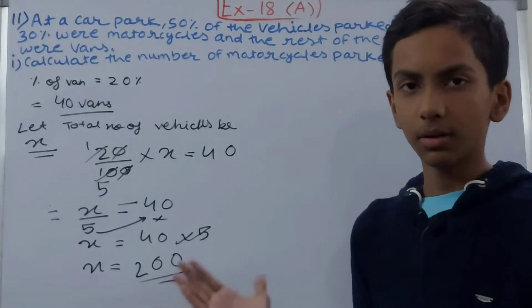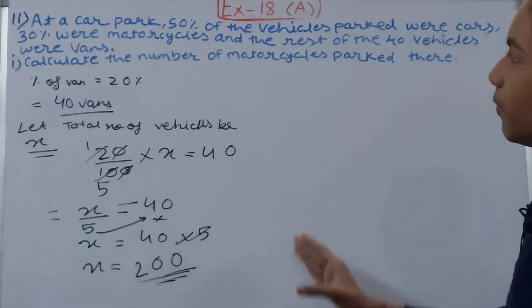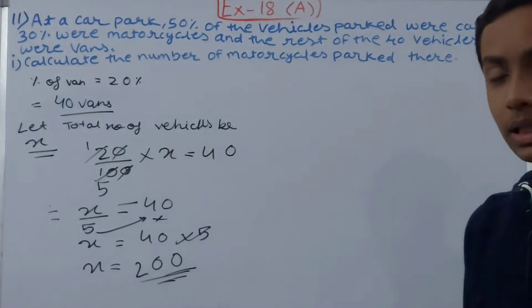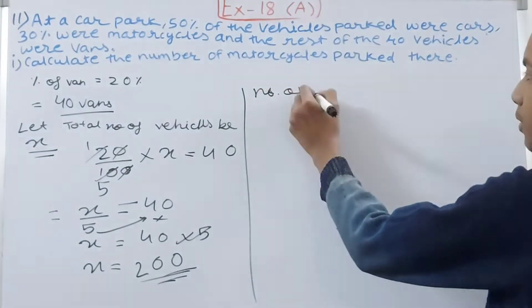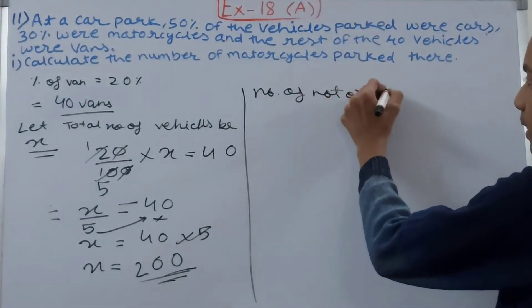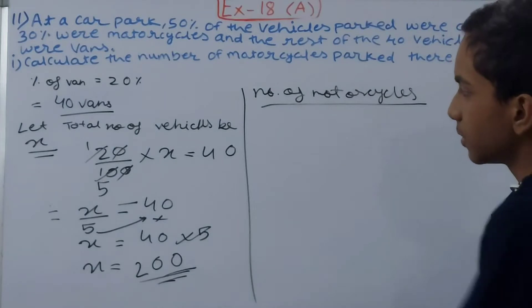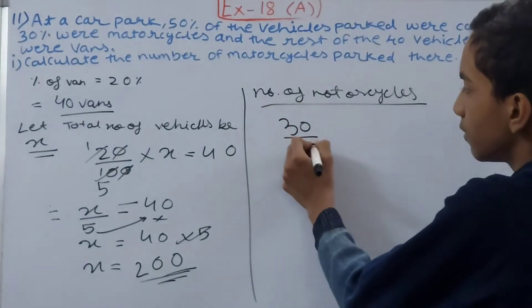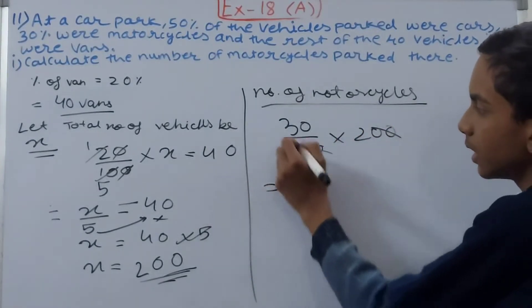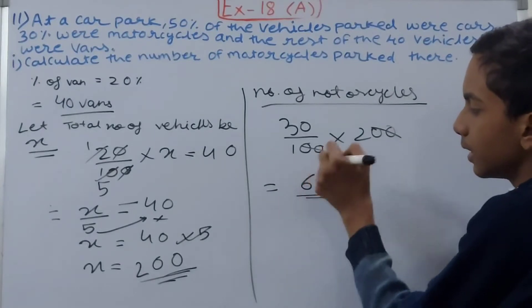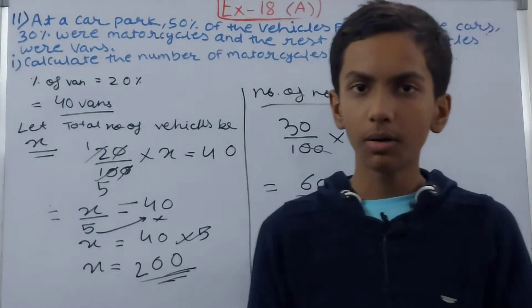So 200 vehicles were parked in total. Now we have to find the number of motorcycles, and their percentage is 30%. So the number of motorcycles = 30/100 × 200. Canceling the zeros, 30 × 2 = 60. So there were 60 motorcycles parked in the car park.